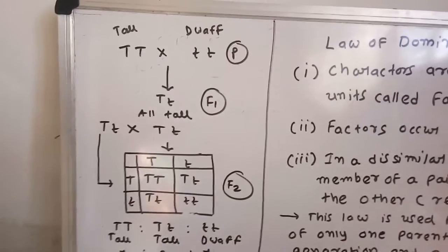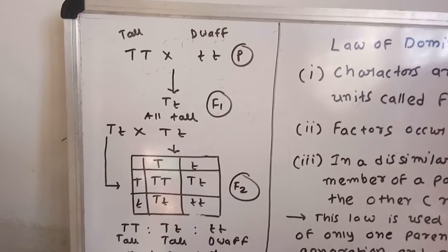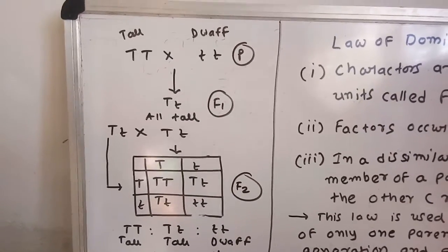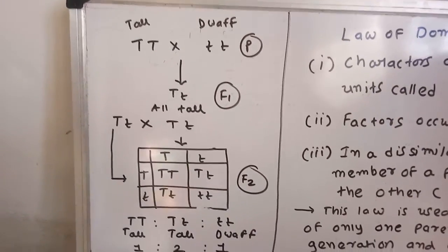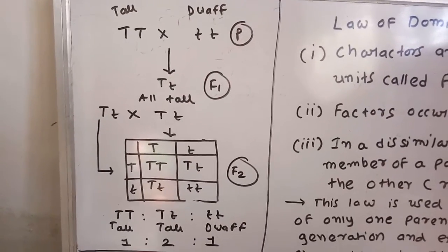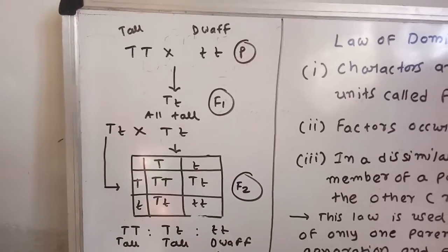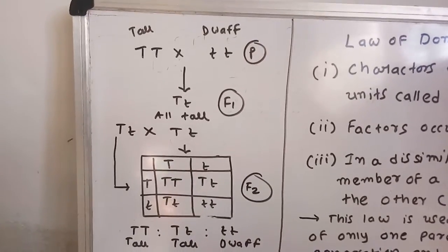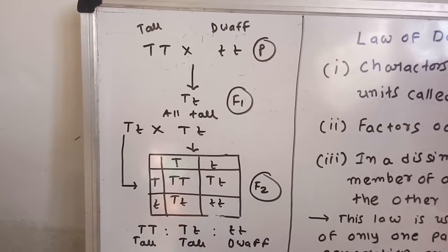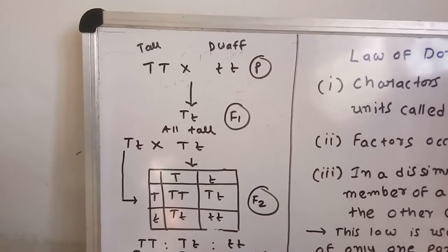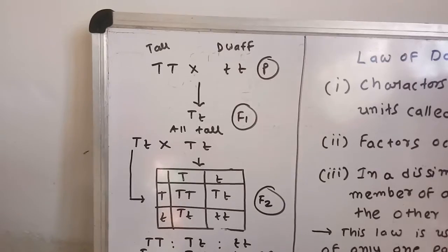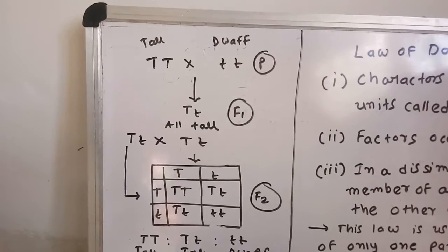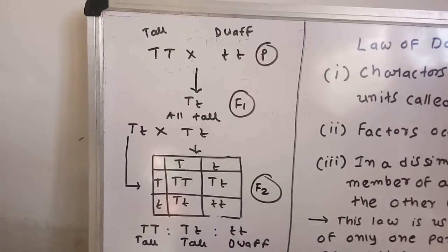In this case, factors are present in an organism which control a particular trait or a character. These factors are discrete units, meaning separate independent units.